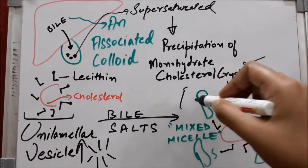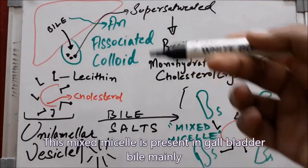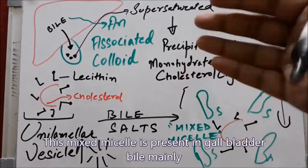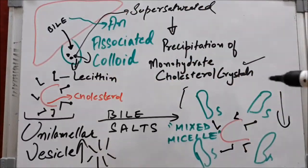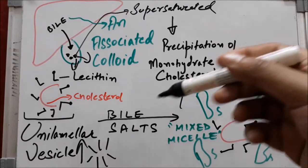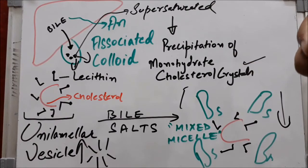...where saturation takes place. Saturation occurs because of the absorption of water and electrolytes into the bloodstream. So if the mixed micelles are abundant and water is less, it will lead to the precipitation of crystals.